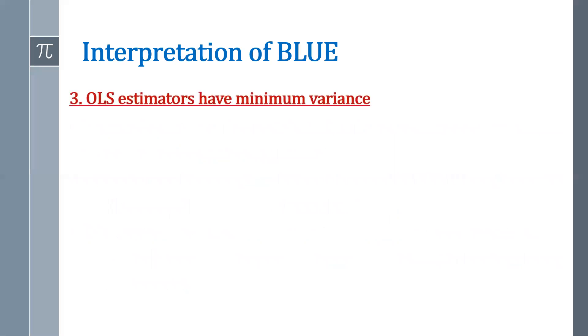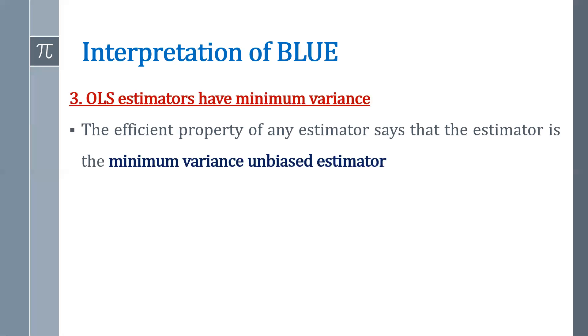And third, we are saying that OLS estimators have minimum variance. The efficient property of any estimator says that the estimator is the minimum variance unbiased estimator. Now, why we are saying that OLS estimators have minimum variance?